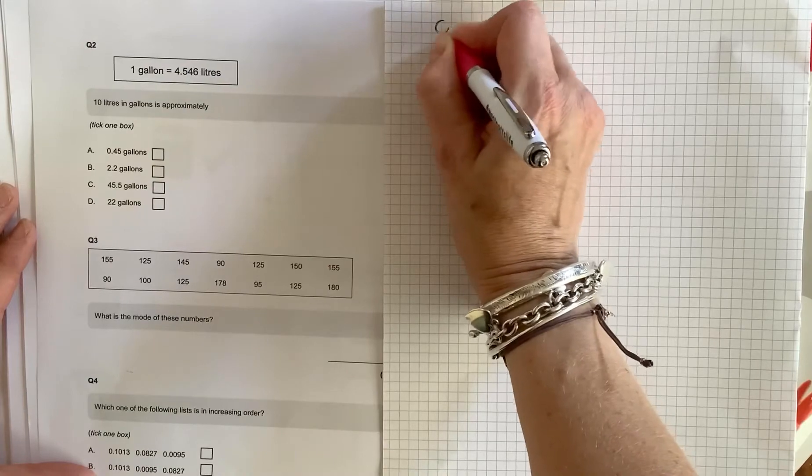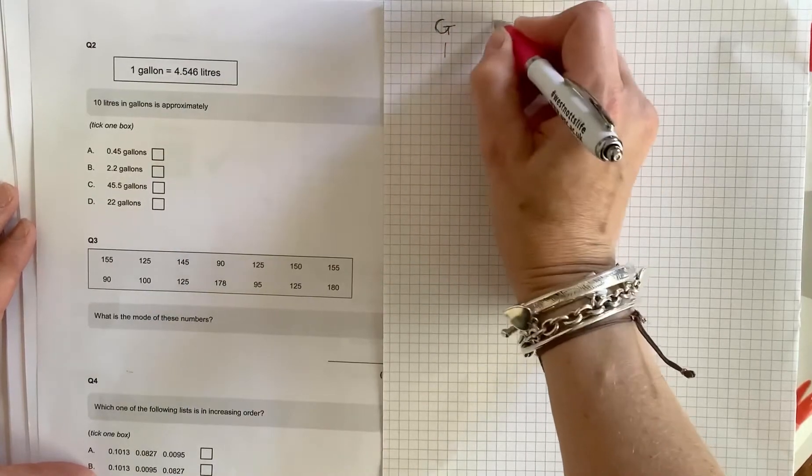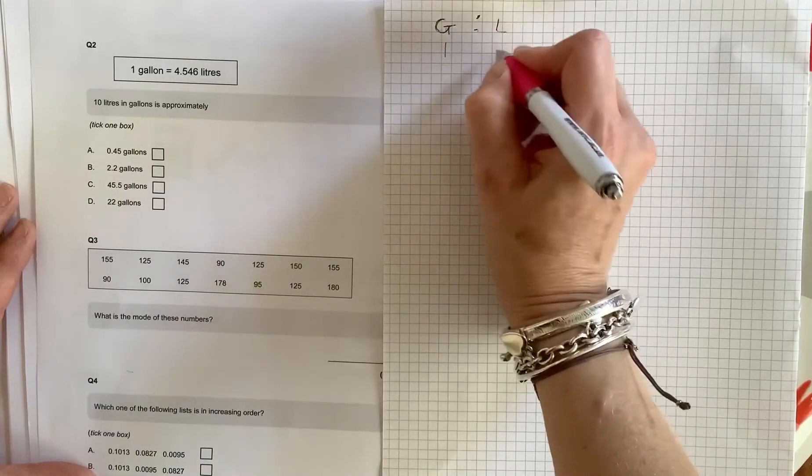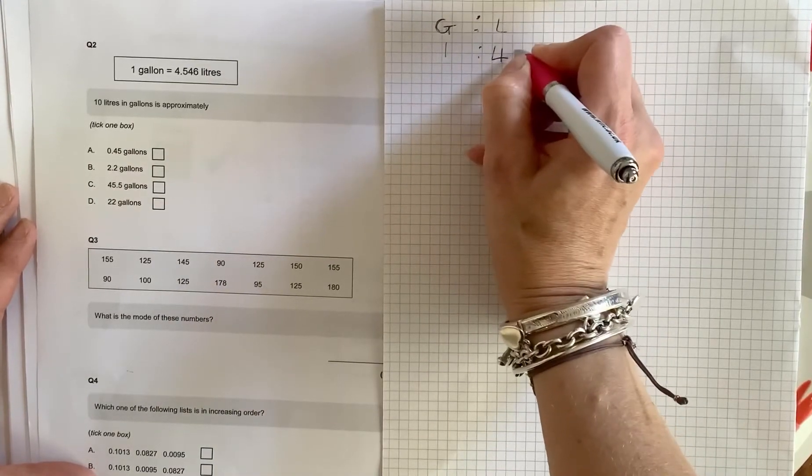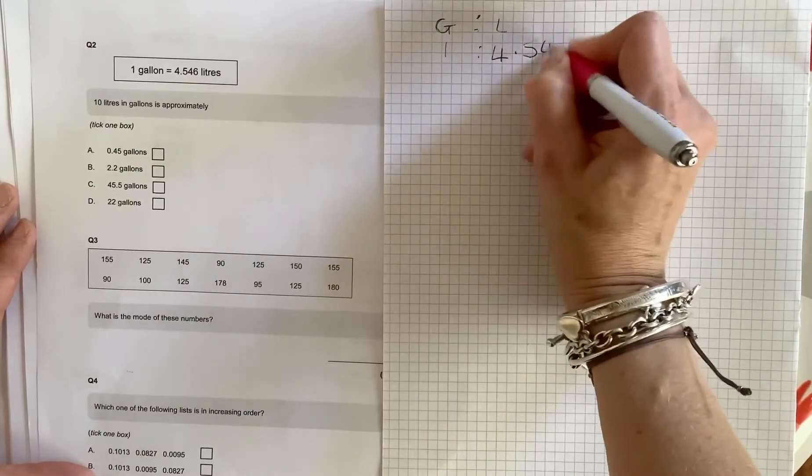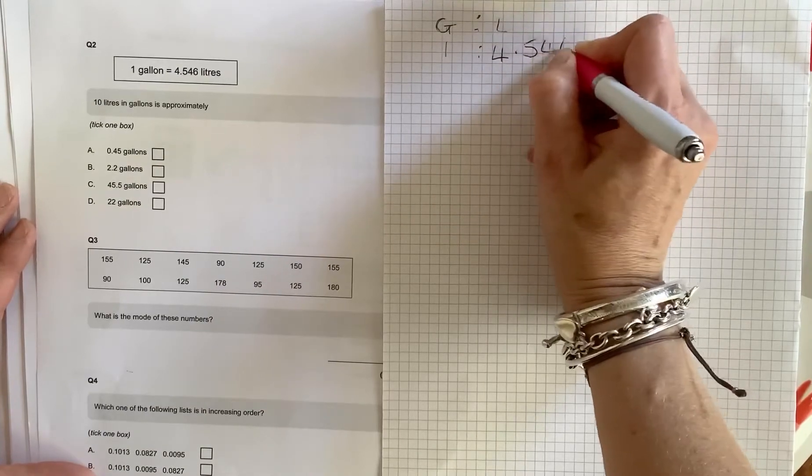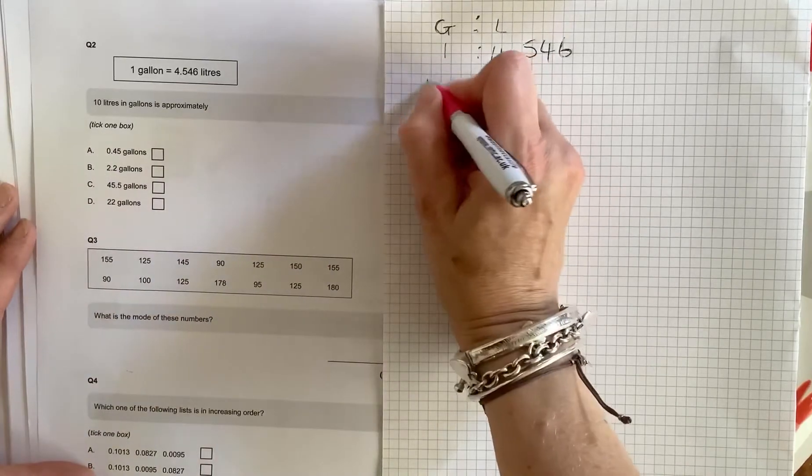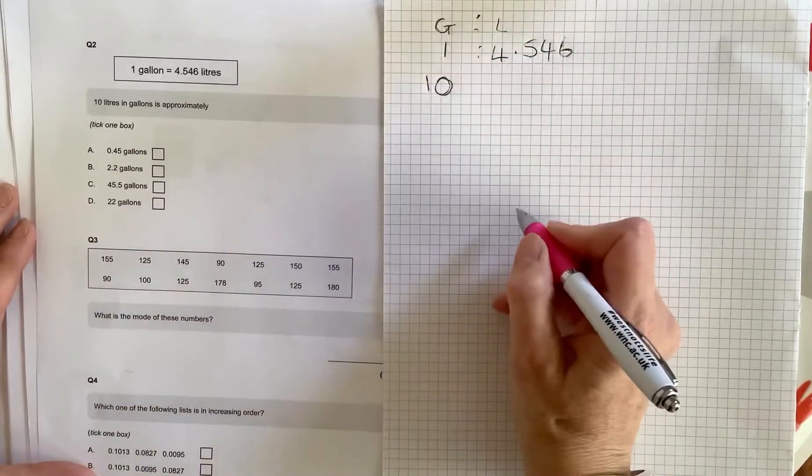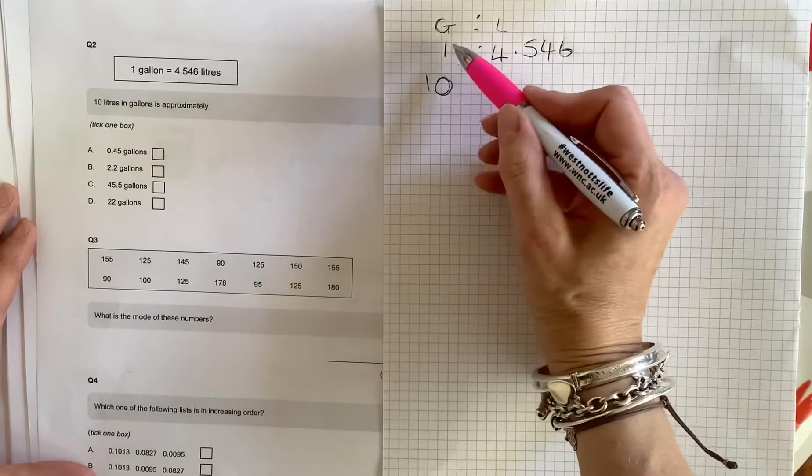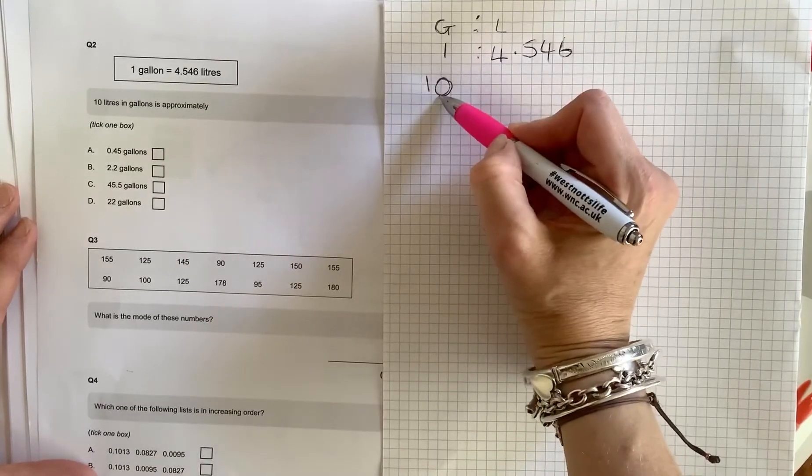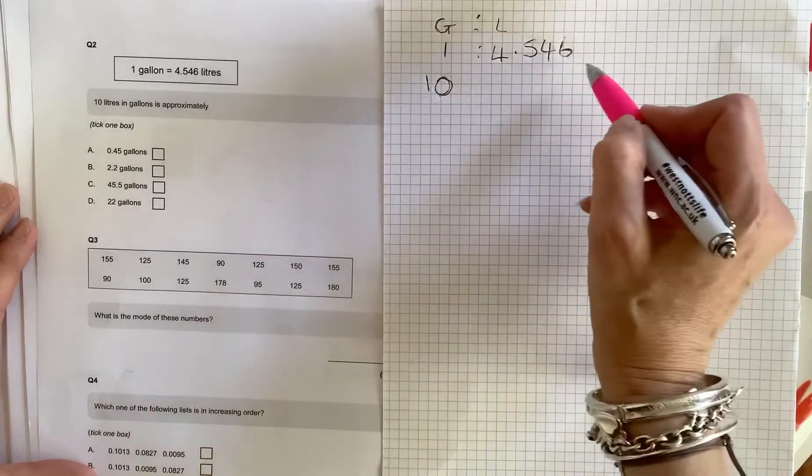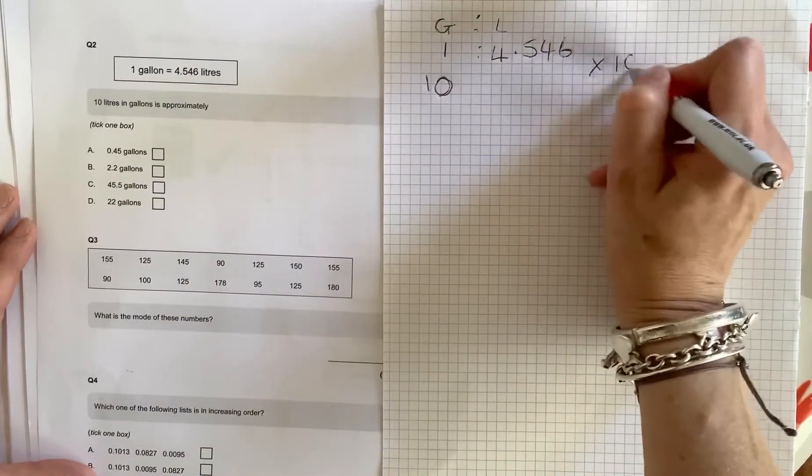So we've got gallons and we've got litres. We've got 1 gallon is the same as 4.546 litres. But we want to know what 10 gallons is. So I'm going to put 10 on the gallon side. I'm going to get a better pen in a minute as well. So what do I do from 1 to get it up to 10? I multiply it by 10. So I do the same to this side. I multiply by 10.